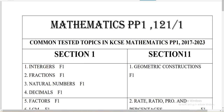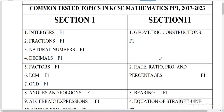Let us look at the analysis of Mathematics Paper 1 and Paper 2. We want to look at the common tested questions from KCSE 2017 to 2023 — that is 17, 18, 19, 20, 21, 22, 23 — the last seven years. We shall then be able to say what you are expecting this year, 2024. So let us deal with Section A first.